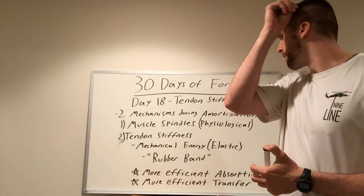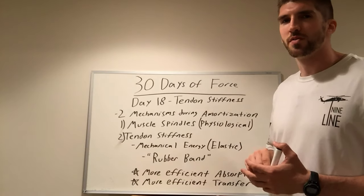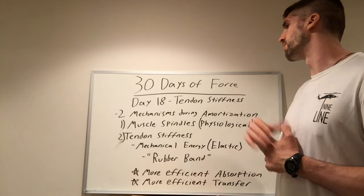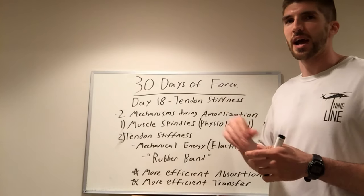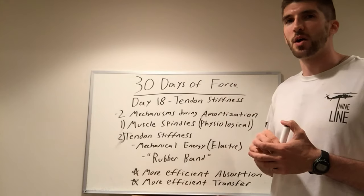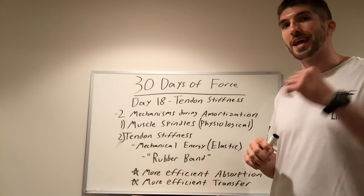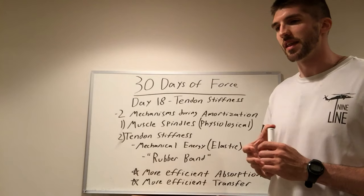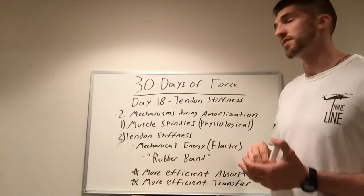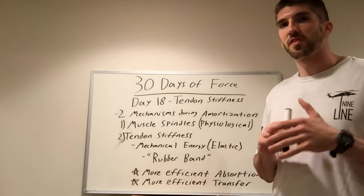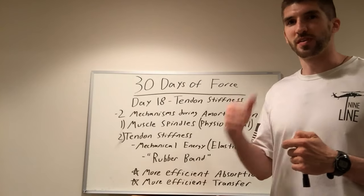Before we go into tendon stiffness, I want to briefly review a concept we've talked about in a previous video. If we look at our amortization phase of our stretch-shortening cycle — the stretch-shortening cycle is that overall 'V' shape we've been talking about, that force absorption and force production. The stretch part is the lengthening and stretching of the muscles, the shortening part is the contraction and force production, and the transition between the two is the amortization phase — that split second where we go from force absorption to force production.